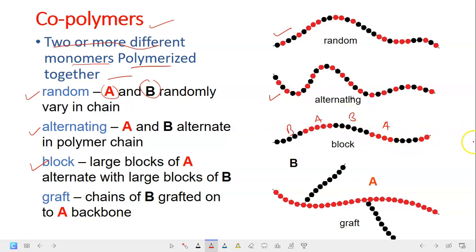And then we have the graft, in which the chains of B monomer is actually grafted onto the A monomer, the backbone of the A monomer. So this is the B and this is the A. So it's actually grafted to the backbone of the monomer. So these types of copolymers are important and you should be able to draw the random, the alternating, the block, and the graft. You should be able to describe and to compare all the different types of copolymers.